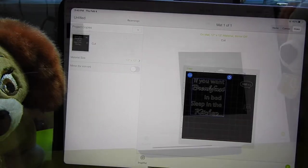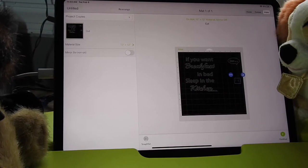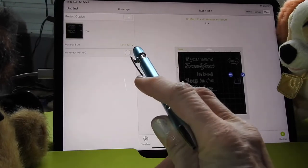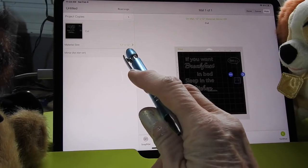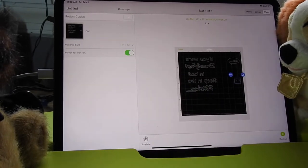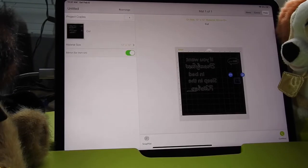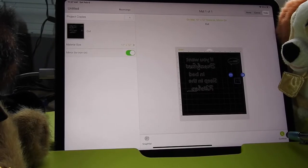I'll show you it on my mat how I lined up the vinyl to match this mat. Now this is where you're going to want to mirror it. We're going to go up here to mirror iron-on. It's not an iron-on, it's a vinyl, but because it's going on the backing of a piece of glass we have to mirror it. After we mirror it we're going to go down here to continue.